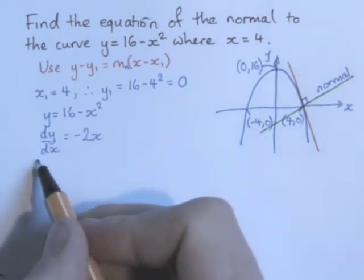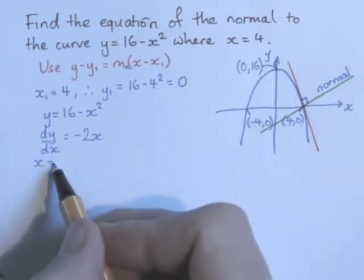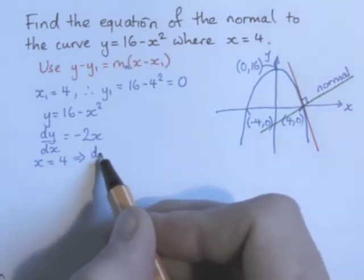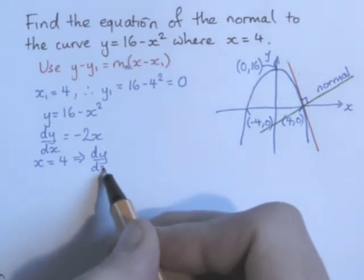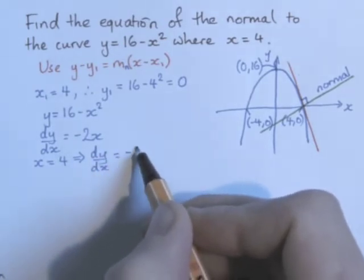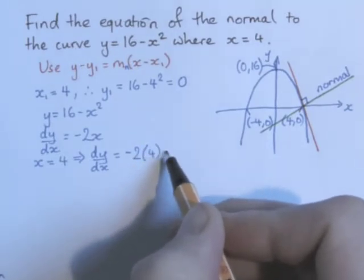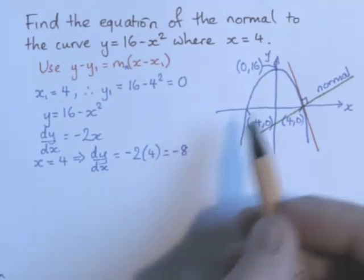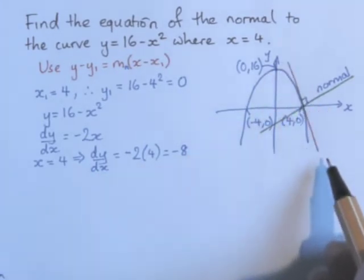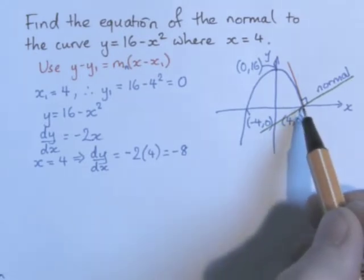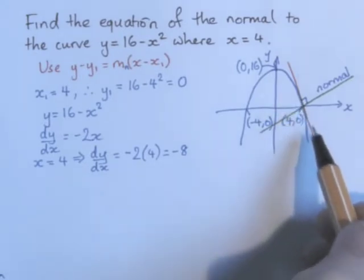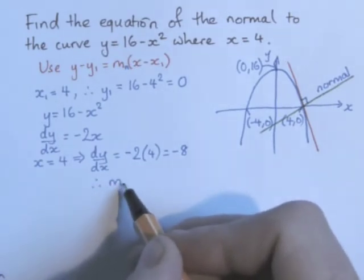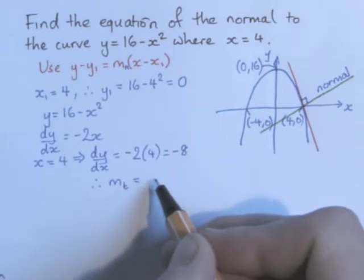Now I can say that when x is equal to 4, that tells me that dy/dx is going to be equal to minus 2 times 4, which is minus 8. Because the tangent and the curve meet at the point 4, 0, the gradients will be the same there. So I can say that mₜ, for the gradient of the tangent, will be minus 8.